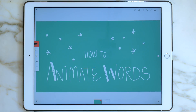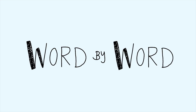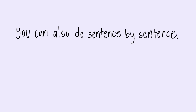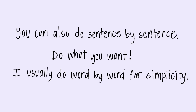This is the easiest part now. We are going to decide how we want the words to be animated. You can do this letter by letter, word by word, or sentence by sentence. Do what you want — I usually do word by word for simplicity.